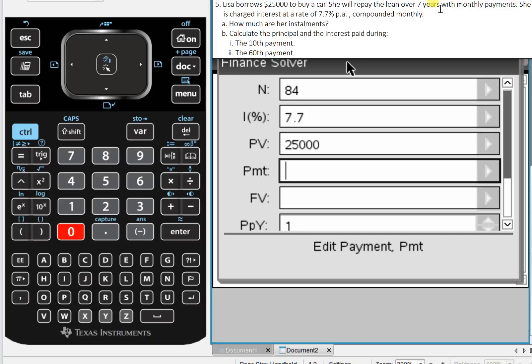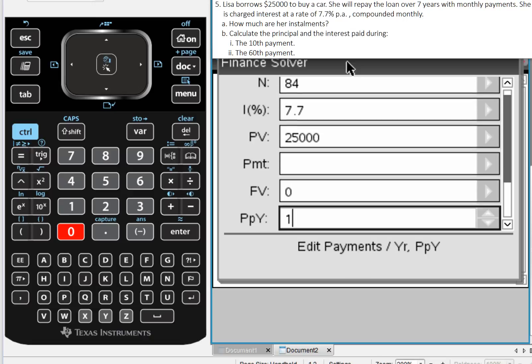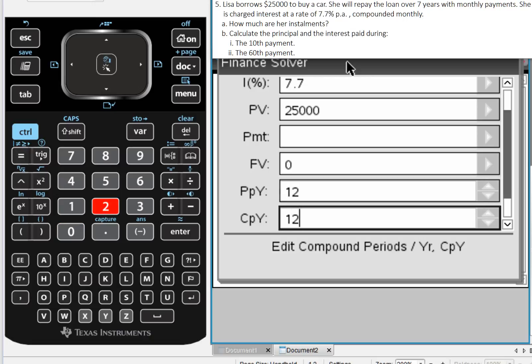PMT, well that's what we're looking for, that's the installments. FV, eventually she will have paid off the loan, so FV should be 0. And PPY and CPY are both 12.